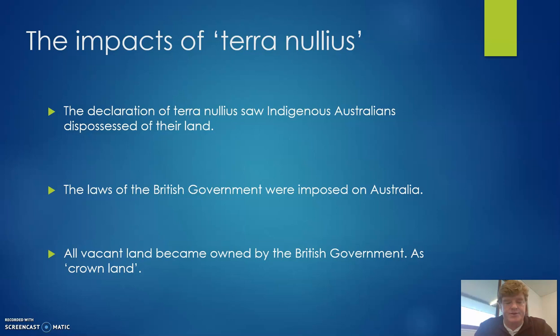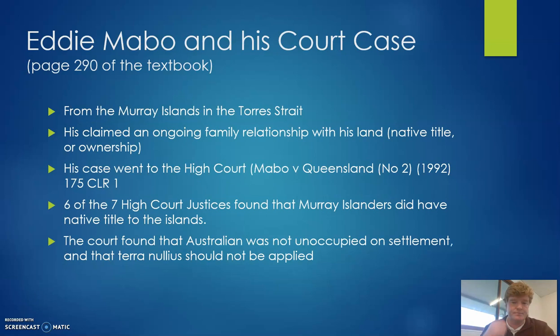There was an idea in the British system of government that recognised Crown land — if the land wasn't owned by someone else, it became government land. So effectively, this idea of terra nullius, the vacant empty land, meant that basically all the land then became owned by the government.